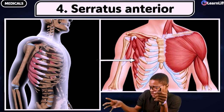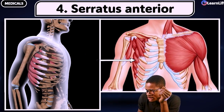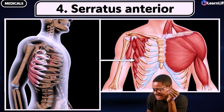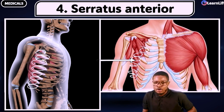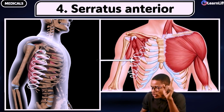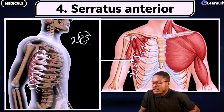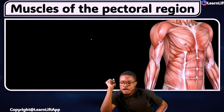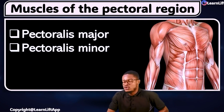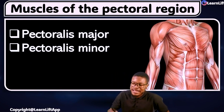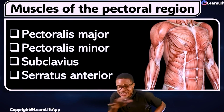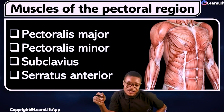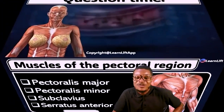And the serratus anterior — it's a zigzag muscle, it looks like a zigzag pattern running all the way through. So don't forget your two P's: number one pectoralis major, number two pectoralis minor — that's P major and P minor — number three is subclavius, and number four is serratus anterior.